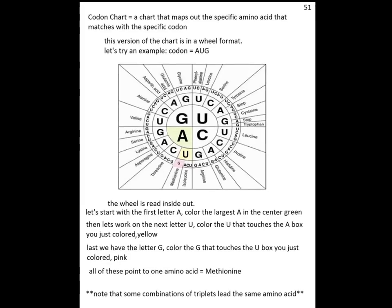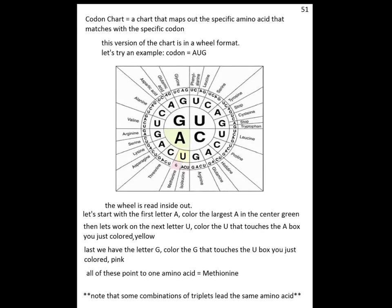You start from the center point, which are these big old letters, these really large fonts. You go from here and then you go outwards until you find the amino acid that you're looking for.